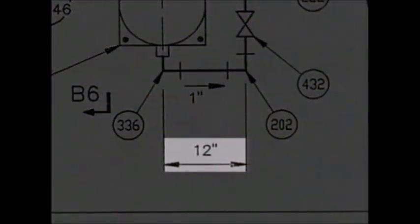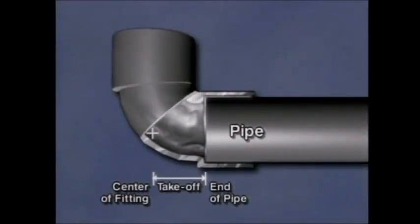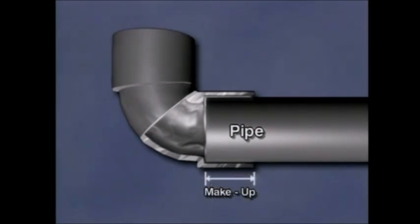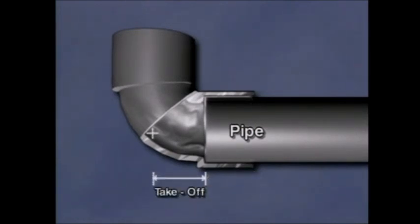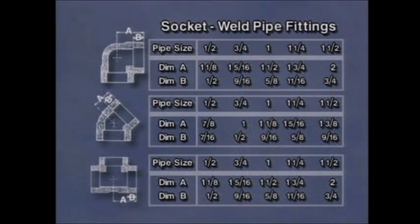Most measurements are center to center — that is, from the center of one fitting to the center of another fitting. This is not the length of the pipe. The pipe ends are not at the center of the fitting. With screwed, socket weld, and plastic fittings, the pipe ends insert a certain distance into the fitting — this is called make-up. The distance from the made-up end of the pipe to the center of the fitting is called the fitting takeoff. To determine the actual pipe length from a center-to-center measurement, you must subtract the takeoff for each fitting. Takeoff dimensions vary with pipe size, and tables giving takeoff dimensions for each size pipe can be found in pipe manuals.